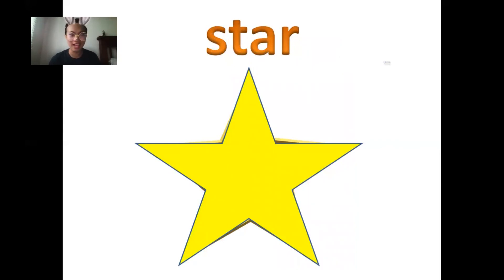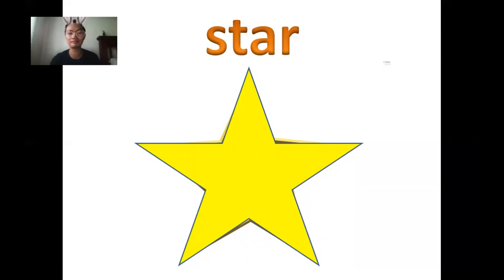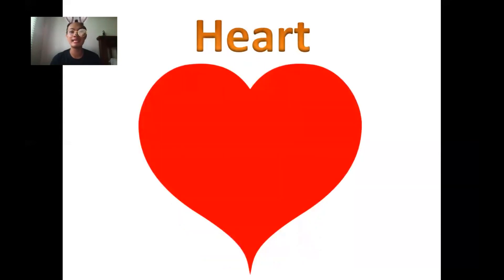It's a yellow star. It's a yellow star. It's an orange oval. It's an orange oval. It's a red heart. It's a red heart. All right! Very good! That's all for today! See you next time. Goodbye!